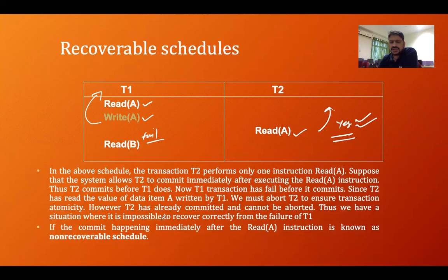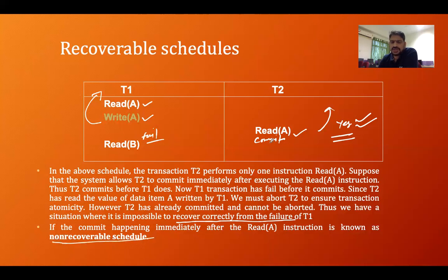However, T2 has already committed and cannot be aborted. Thus we have a situation where it is impossible to recover correctly from the failure. If T2 does commit immediately after the read, it cannot be rolled back because it has already been committed into the database. In that situation, we need a strategy to handle the failure. If commit occurs just after the read instruction, this is known as the non-recoverable schedule — aborting T2 is not at all possible.